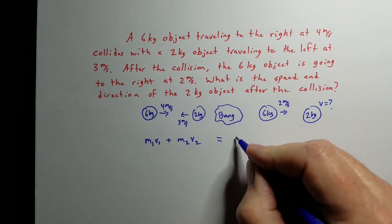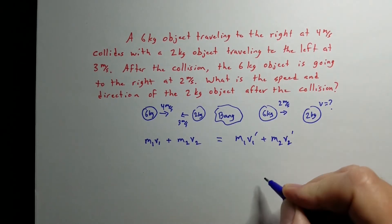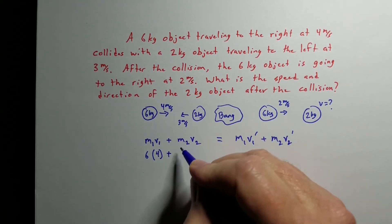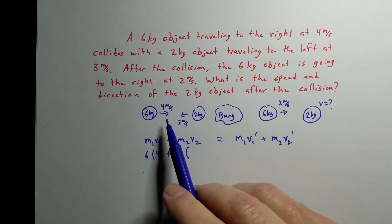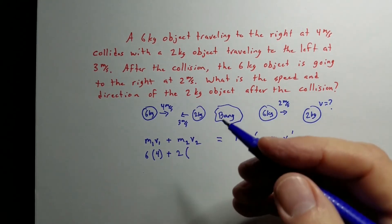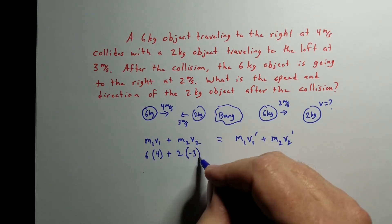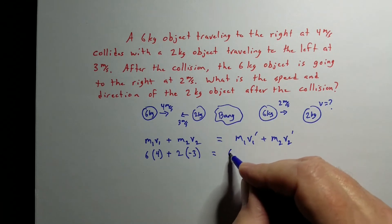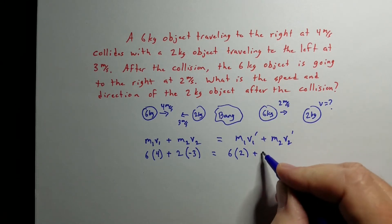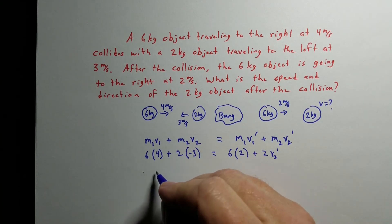Dropping in the numbers: 6×4 + 2×(-3) = 6×2 + 2×v₂'. Momentum is a vector, so if going to the right is positive, then anything going to the left is negative — that's the traditional convention. So the 2 kg object's velocity is negative three because it's going to the left. After the collision the 6 kg object is still going to the right, so it stays positive at 2 m/s, plus two times some unknown velocity after the collision.